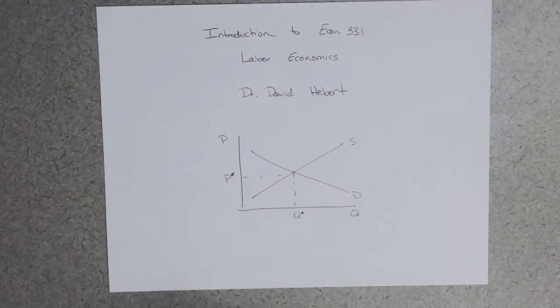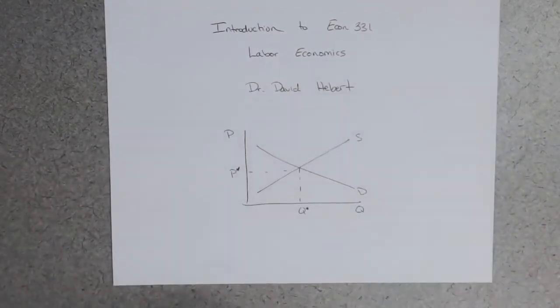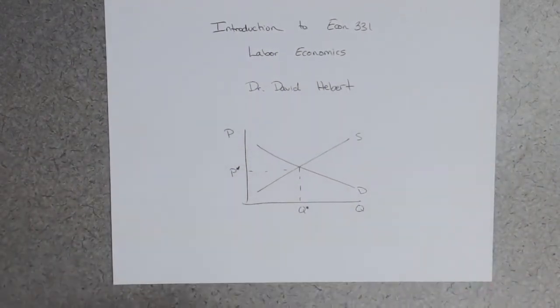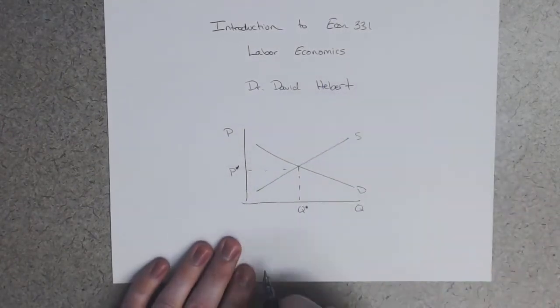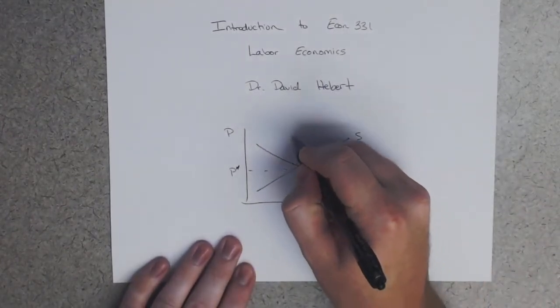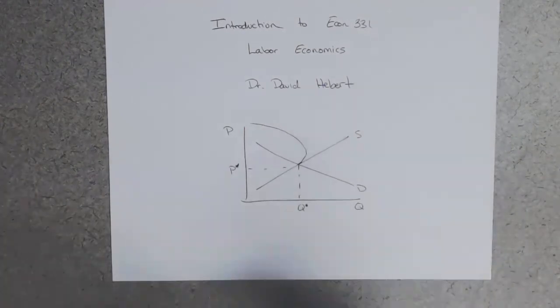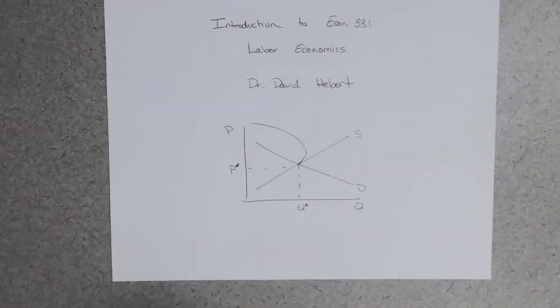But there's much more. There's different markets that we need to talk about, different considerations. We need to figure out, well, maybe this supply curve doesn't slope up. Maybe it actually slopes backwards like that. What would that look like? And why would it do that? So we'll be talking about all kinds of crazy things like this.